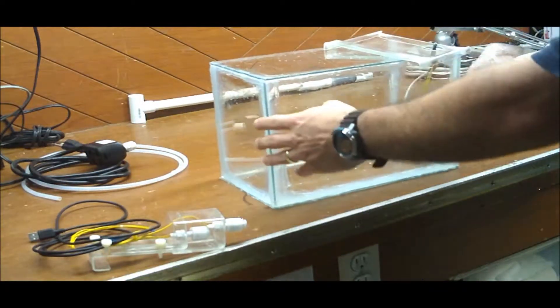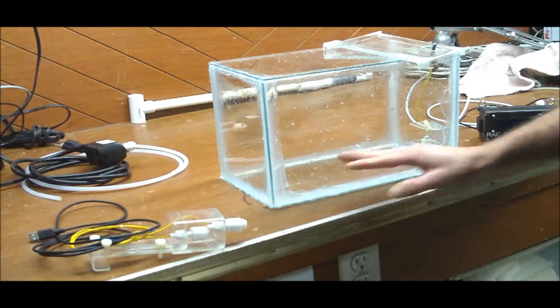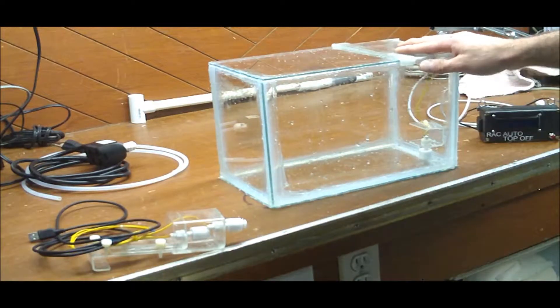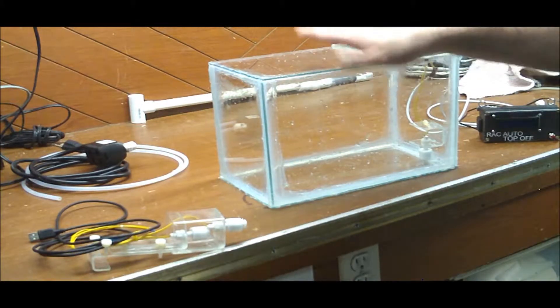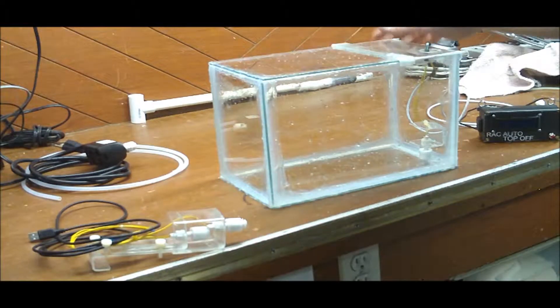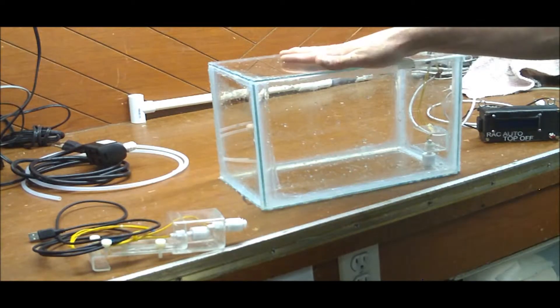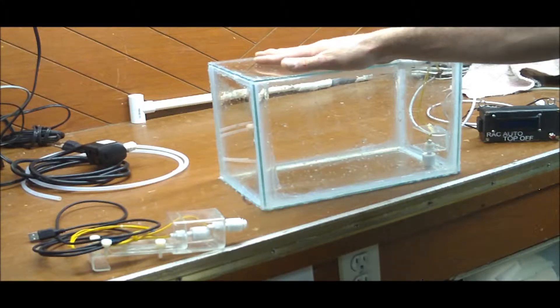This is my auto top off reservoir I made. It basically is a two and a half gallon tank. And even though you're probably like me and you want to make your own, I think it's almost simple just to go buy a small two and a half or five gallon fish tank.